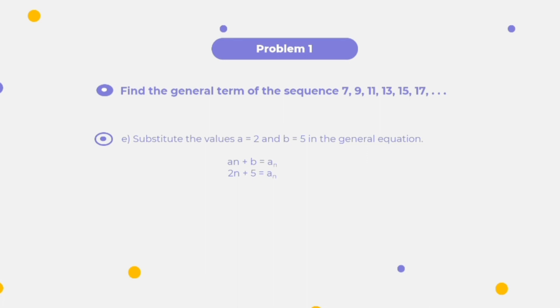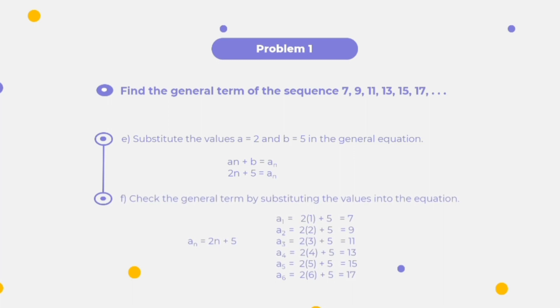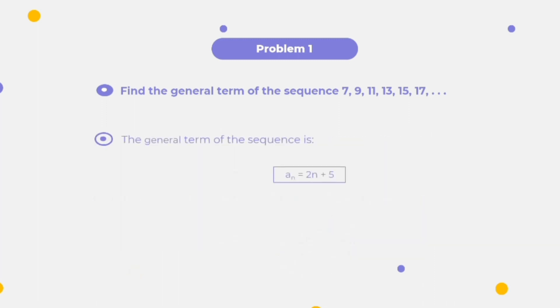To check if the formula satisfies the given sequence, we substitute values into a sub n equals 2n plus 5: a sub 1 equals 7, a sub 2 equals 9, a sub 3 equals 11, a sub 4 equals 13, a sub 5 equals 15, and a sub 6 equals 17. Therefore, the general term of the sequence is a sub n equals 2n plus 5.